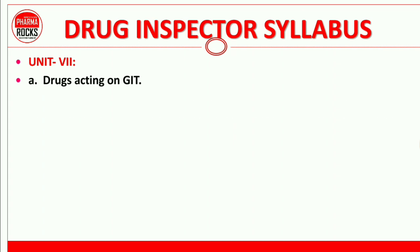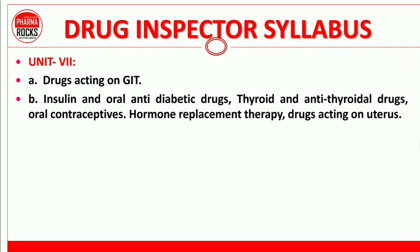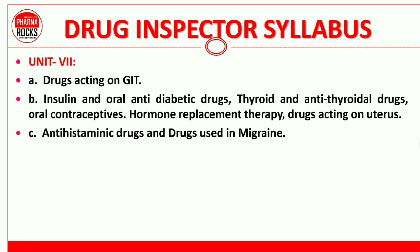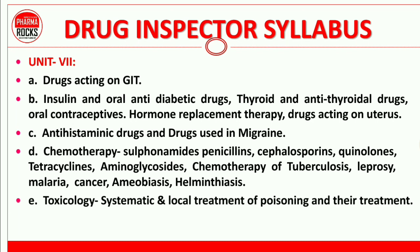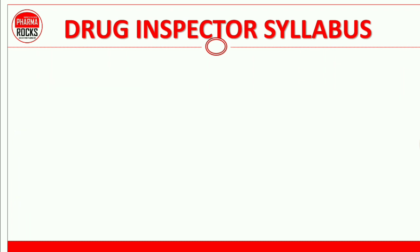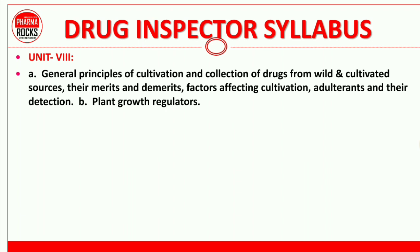Unit 7 covers drugs acting on the GIT, insulin, oral anti-diabetic drugs, thyroid and antithyroid drugs, oral contraceptives, hormone replacement therapy, drugs acting on the uterus, antihistamines, and drugs used in migraine. Chemotherapy is the most important section — study sulfonamides, penicillin, cephalosporins, quinolones, tetracyclines, aminoglycosides, chemotherapy of tuberculosis, leprosy, malaria, and cancer. Toxicology is also included in Unit 7.